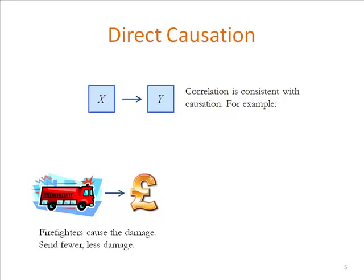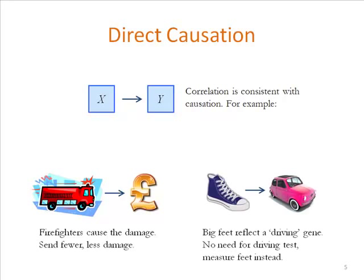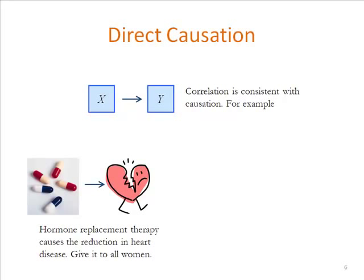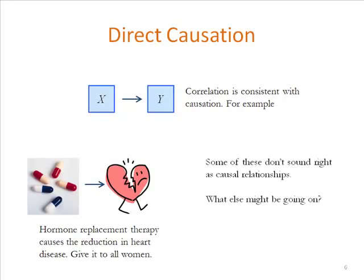What's the causal interpretation for our three examples? Firefighters cause fire damage — so the way to improve things is to send fewer fire engines to fires to reduce the damage. Big feet perhaps reflect some inherent driving gene — no need for a driving test, just measure people's feet. Hormone replacement therapy causes a reduction in heart disease, so give it to everyone — at least all post-menopausal women. But some of these causal relationships don't sound quite right. Something a bit fishy is going on with some of these. What else might be happening in these data?